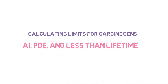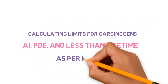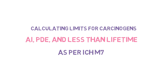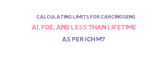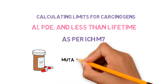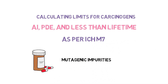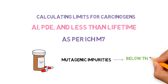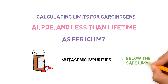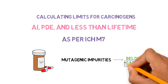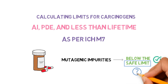Calculating limits for carcinogens, acceptable intake (AI), permissible daily exposure (PDE), and less-than-lifetime exposure as per ICH M7. Any drug product is expected to have some level of mutagenic impurities; however, this is not a concern when the level is below the safe limit. How are these acceptable limits derived for mutagenic impurities?